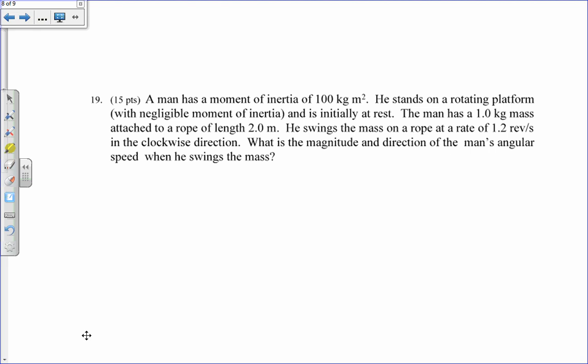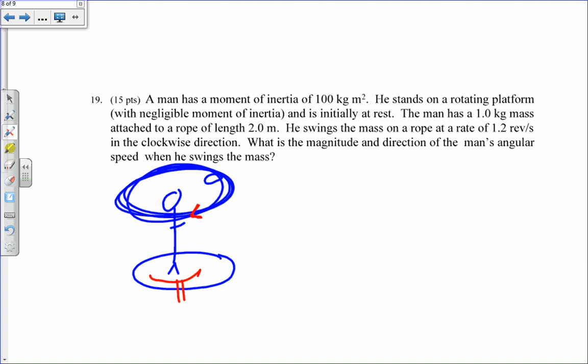I have this man with a moment of inertia of 100 kilogram meters per second squared. And he's standing on a rotating platform. Initially nobody's moving. But then the guy starts swinging this ball overhead in one direction, clockwise direction actually. Now I want to know the magnitude and direction of the man's angular speed, because he's on this rotating table. If this is going in this direction, then this is now going to go in this direction. So I have angular momentum. Li equals Lf. Now, initially they're both zero, zero rotation. So there's no angular momentum.